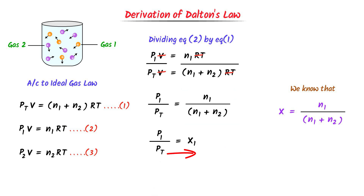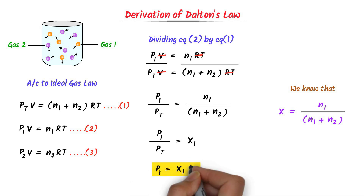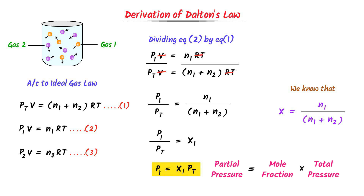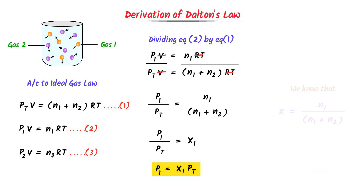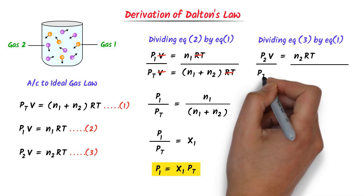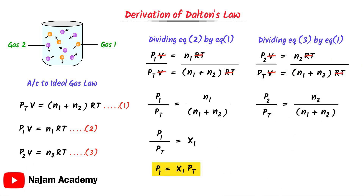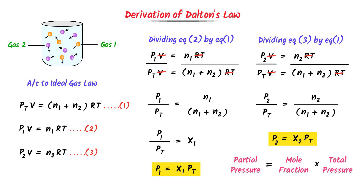I shift Pt to the right-hand side to get P1 = X1 × Pt. It means that the partial pressure of the first gas is equal to the mole fraction of the first gas times the total pressure. If you want to learn more about mole fraction, watch our video — its link is given in the description. Similarly, dividing equation number 3 by equation number 1 and after calculation, I get P2 = X2 × Pt. It means the partial pressure of the second gas is equal to the mole fraction of the second gas times the total pressure. Thus, this is the equation of Dalton's Law of Partial Pressure.